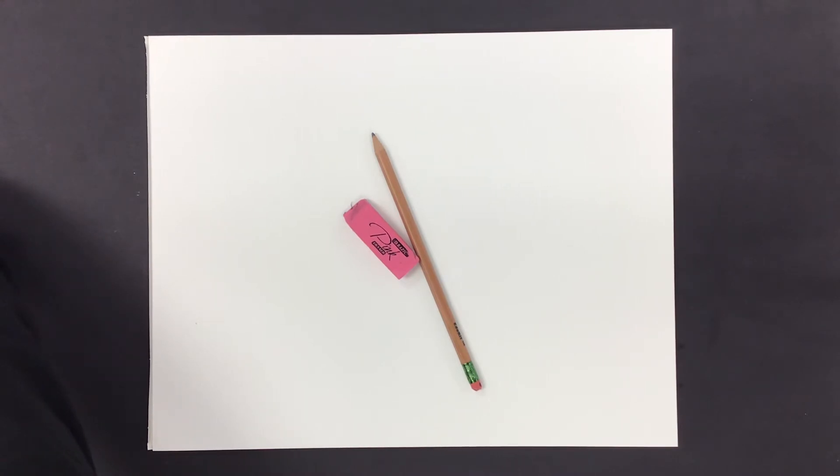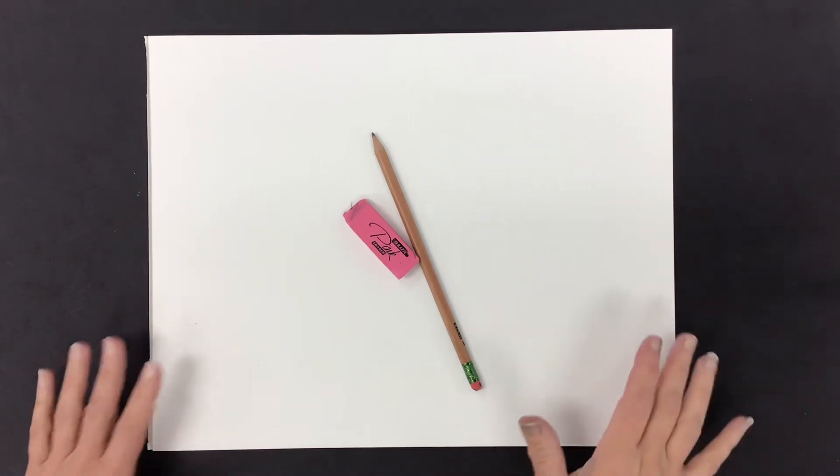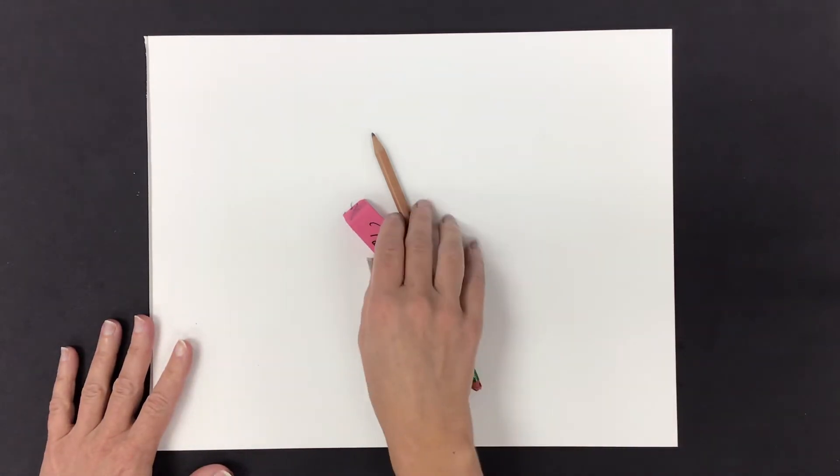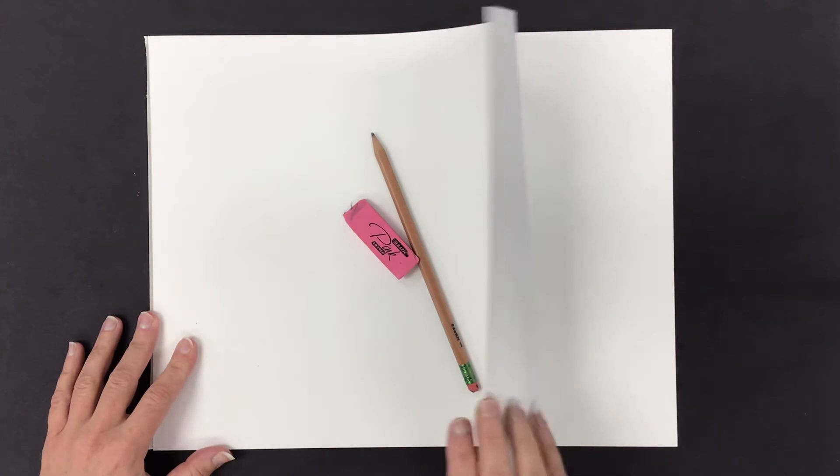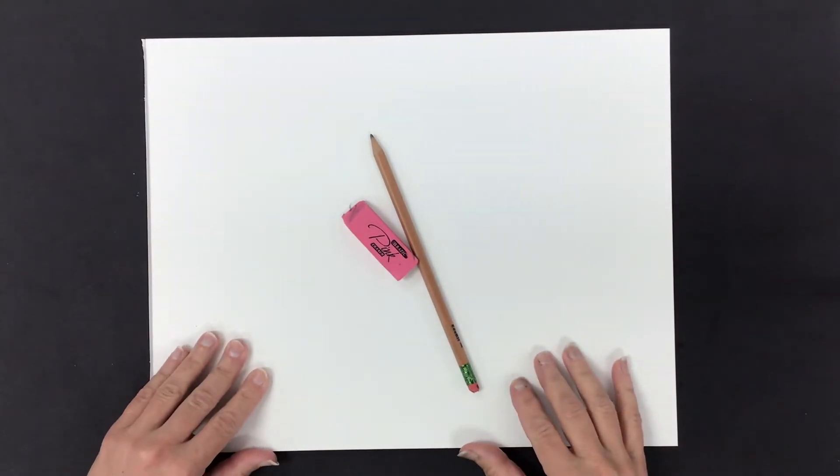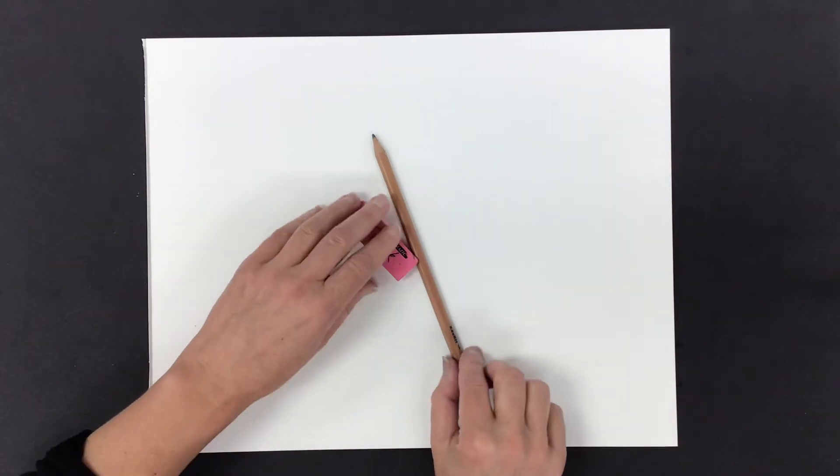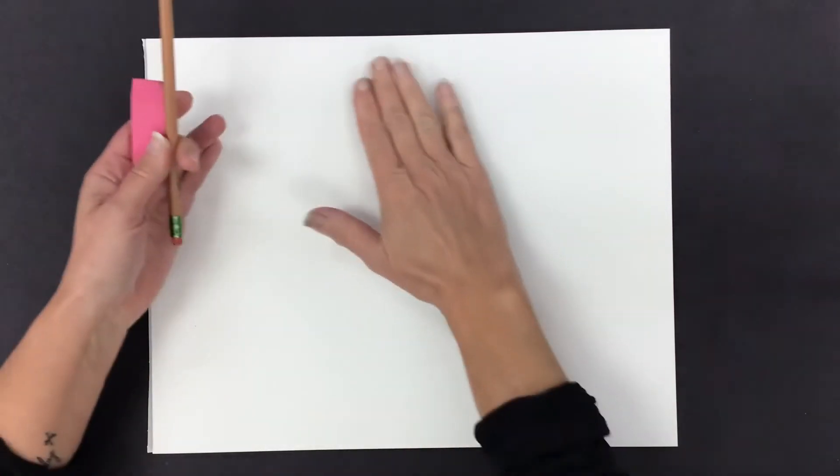This is called a landscape line design and what we have in front of us right here are our pencil and eraser and a piece of paper. This is from a pad and this is 11 by 14 inches. It is going to be the perfect size for our landscape drawing. Let's begin.